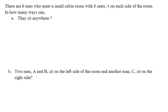There are 6 men who enter a small cabin room with 8 seats, 4 on each side of the room. In how many ways can they sit anywhere?